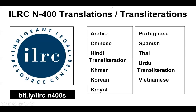The next one is the Immigrant Legal Resource Center. They have translations and transliterations of the N-400 in various languages. You cannot use these N-400 translations to actually apply, but you can use them so students can more deeply understand the vocabulary they're trying to learn. This has been very helpful. These are free PDFs. Most of them are based on the N-400 released in 2016, so there have been slight updates, but it's enough for students to understand what's going on and what they're agreeing to.